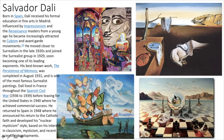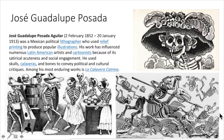This is Salvador Dali. He was born in Spain. Dali received his formal education in fine arts in Madrid. He was influenced by Impressionism and the Renaissance masters from a young age and became increasingly attracted to Cubism and avant-garde movements. He moved closer to Surrealism in the 1920s and joined a Surrealist group. His best known work is The Persistence of Memory — the multi-clock painting right here — completed in August of 1931. It's one of the most famous Surrealist paintings. He lived in France throughout the Spanish Civil War before moving to the United States, where he achieved commercial success — which cost him many of his Surrealist friends. After living in the United States, he moved back to Spain and developed his style even further. Dali was also quite a character, but we're going to move on.